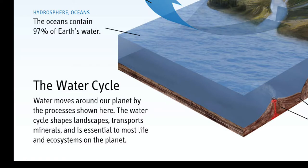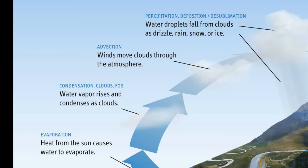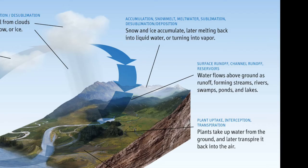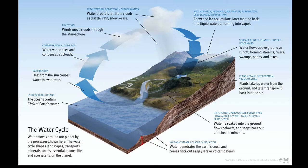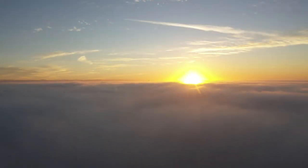Water collects and gains energy. As it gains energy, the molecules move quicker and rise into the atmosphere, where they cool and condense to form clouds, which drop precipitation back to Earth. That runs off and collects once more. It's called the water cycle. And the energy source for the water cycle? The sun.